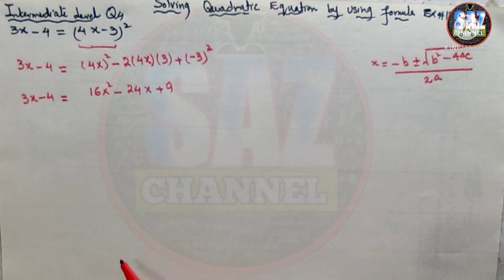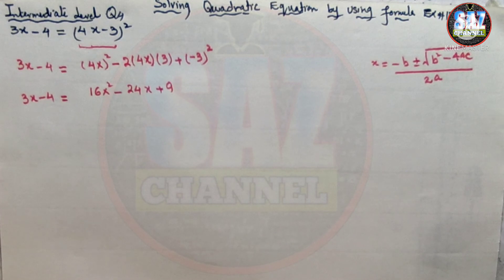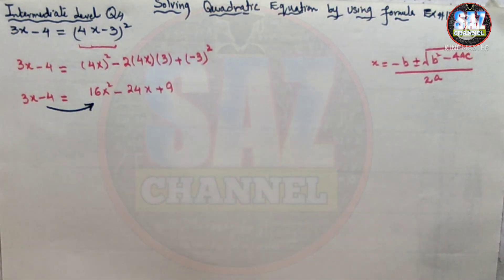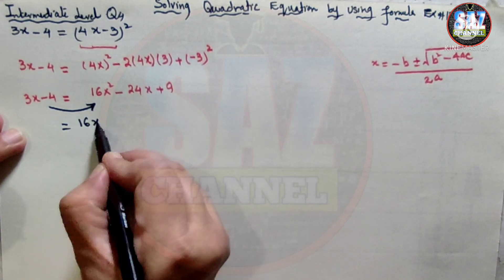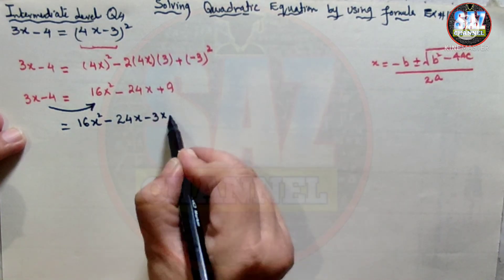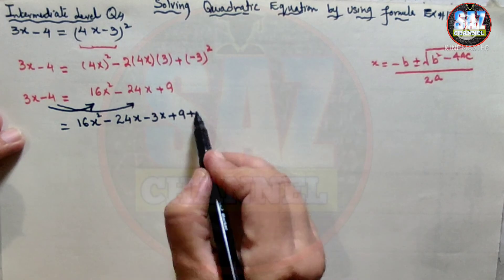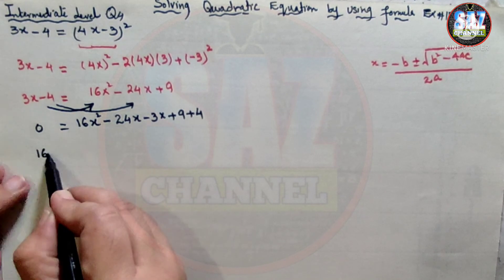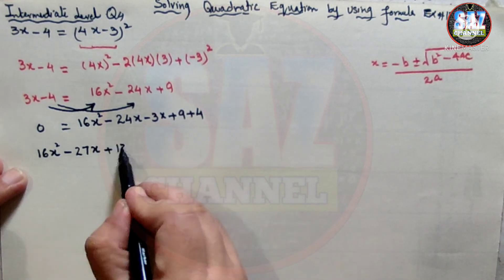Now we have the simplified form. To write this in standard quadratic form, we shift the terms to one side so that one side equals zero. Shifting 3x and minus 4 to the other side gives us: 16x squared minus 24x minus 3x plus 9 plus 4 equals 0, which simplifies to 16x squared minus 27x plus 13 equals 0.